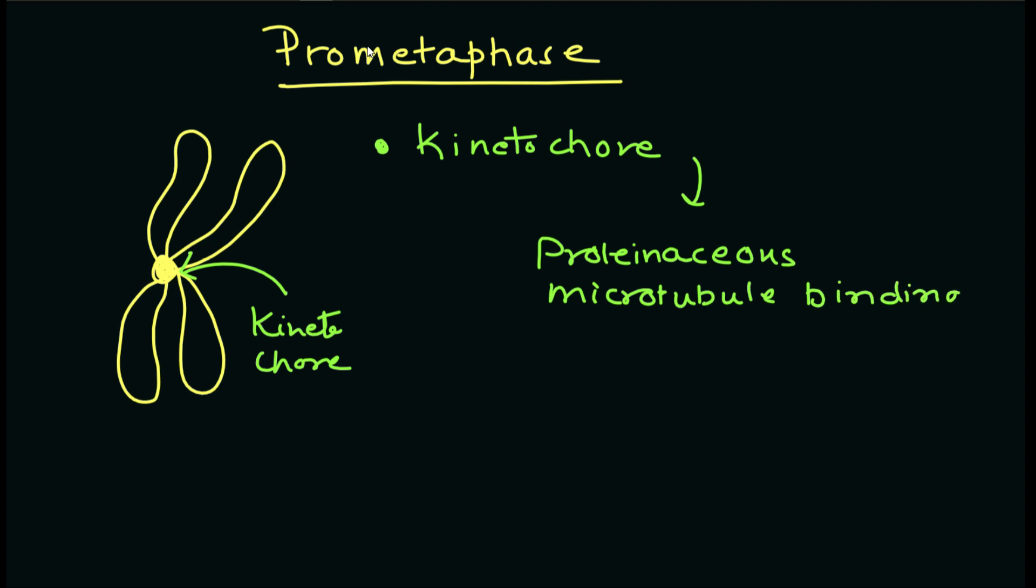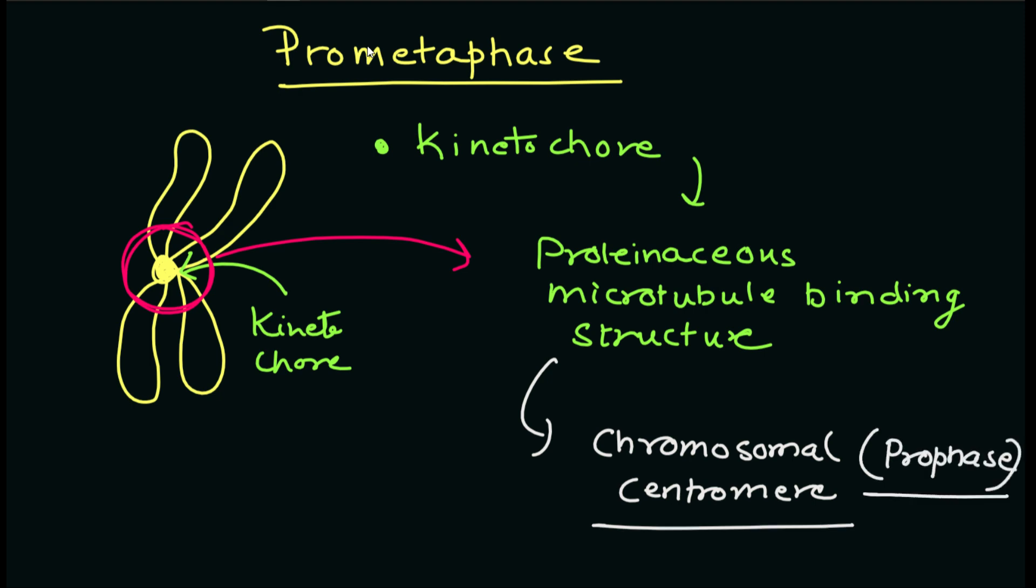A kinetochore is a proteinaceous microtubule-binding structure that forms on the chromosomal centromere during late prophase.